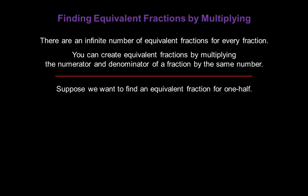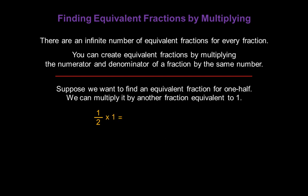Suppose we want to find an equivalent fraction for one half. We can multiply it by another fraction that's equivalent to one, because we know one half times one will give us one half. So let's multiply one half by a fraction that's equivalent to one — in this case, three over three. We'll have a new numerator made up of one times three, and a new denominator that's two times three. One times three is three as our new numerator, and two times three gives us six for our new denominator. So three sixths is equivalent to one half.